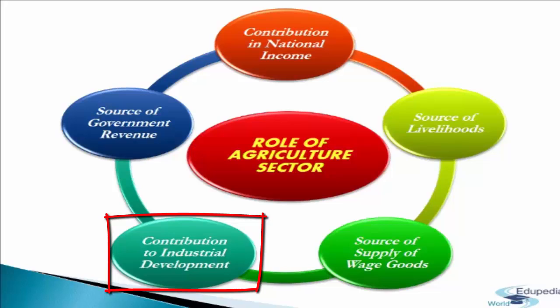The fifth consideration is contribution to export trade. Indian agriculture plays a vital role in the country's trade. Agricultural products like tea, cotton, tobacco, spices, and cashew nuts constitute about 50% of our total exports. Another 20% of total export earnings come from manufactured jute, cotton textiles, and sugar — so nearly 70% of India's exports originate from the agriculture sector. Moreover, agriculture helps the country earn foreign exchange to meet its required import bill.